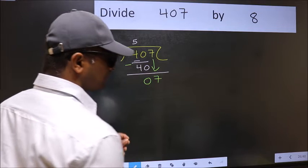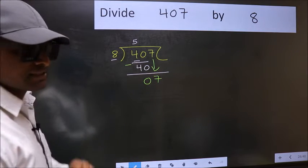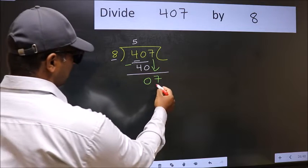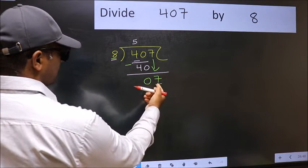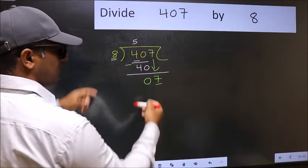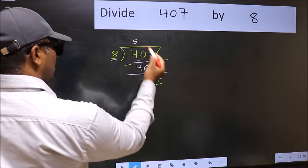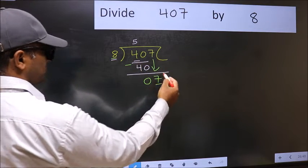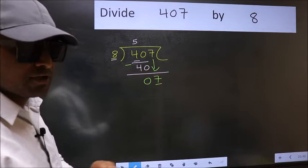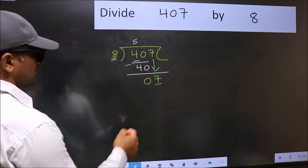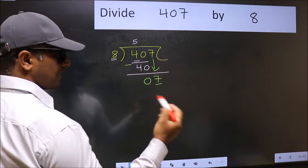After this step, the mistake happens. And the mistake is this. Here we have 7 and here 8. 7 is smaller than 8. So what many do is they directly put dot and take 0, which is wrong. Why is it wrong? Because just now you brought this number down, and in the same step,